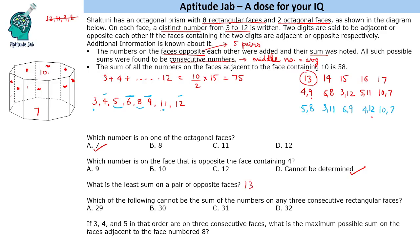Third question: which sum cannot be the sum of any 3 consecutive rectangular faces? The rectangular faces contain numbers like 3, 4, 5, 6, 8, 9, 11, 12 — large numbers averaging around 10. Let us check the largest possible sum: 12 + 11 + 9 = 32, so 32 is possible. Also 12 + 11 + 8 = 31 is possible.